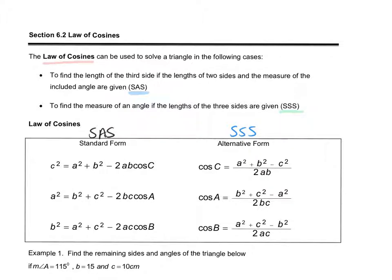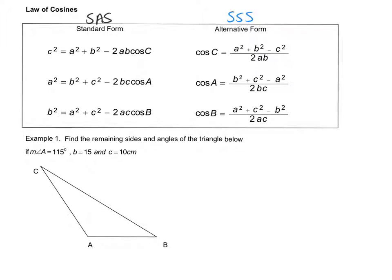Let's use these to solve some examples. We want to start out by identifying what we know. We are told the measure of angle A, the length of side b — which is the side opposite angle B — and the length of side c, which is the side opposite angle C. Angle A is 115 degrees. So I have SAS, side-angle-side, so I'm going to use the standard form and pick the equation where I have angle A, and I am told b and c.